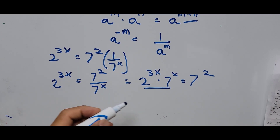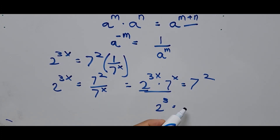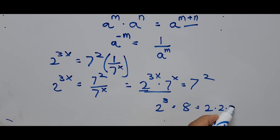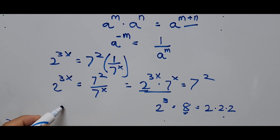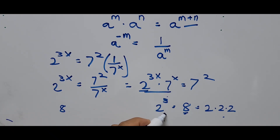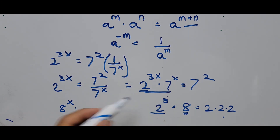2 raised to the 3rd power — which is 2 multiplied by itself 3 times — equals 8. So rewriting, that is 8 raised to the x. Then we have 8 raised to x multiplied by 7 raised to x equals 7 squared.